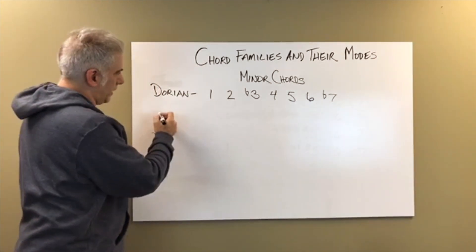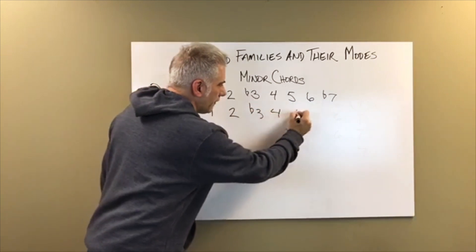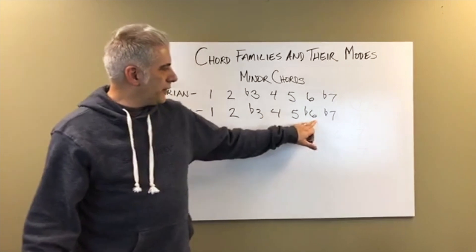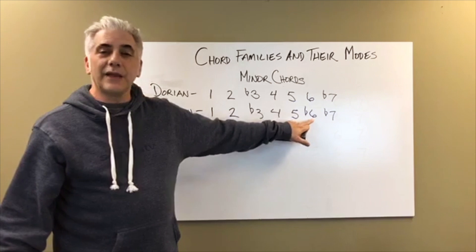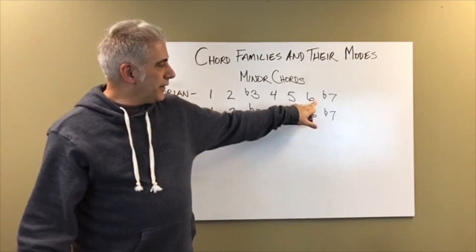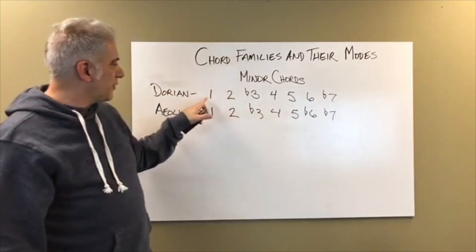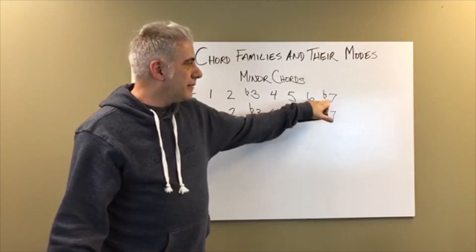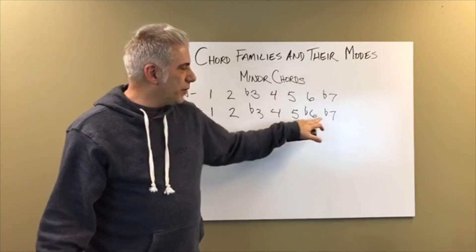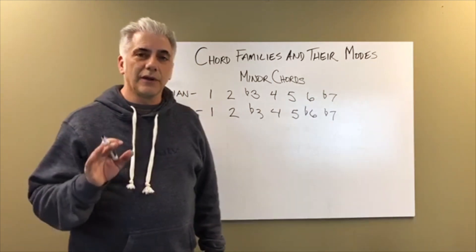The next mode is Aeolian: 1, 2, flat 3, 4, 5, flat 6, flat 7. The difference between Aeolian and Dorian is that Aeolian has a flatted sixth, which creates a melancholy feel. The sixth is a half step away from the seventh. In C Dorian: C, D, E flat, F, G, A, B flat. In C Aeolian: C, D, E flat, F, G, A flat, half step to B flat. You have a stronger pull down to the fifth because of the half step — that's really where that flavor comes in.